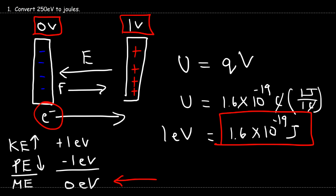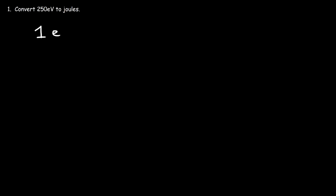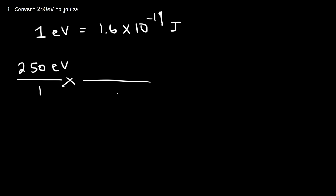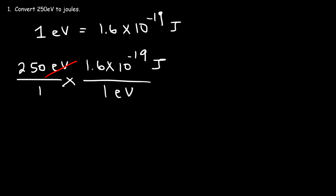Now let's talk about how to convert electron volts to joules. One electron volt equals 1.6 times 10 to the negative 19 joules. Starting with 250 electron volts, put 1 electron volt on the bottom of the conversion factor and 1.6 times 10 to the negative 19 joules on top. The electron volt units cancel, and you get 250 times 1.6 times 10 to the negative 19, which equals 4 times 10 to the negative 17 joules.